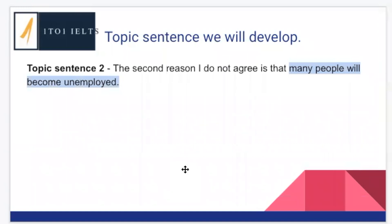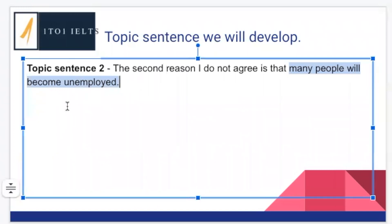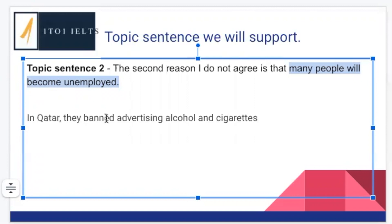Now this is going to be a little bit more difficult. The second reason I do not agree is that many people will become unemployed. How are we going to give an example for this? Obviously there has never been a complete ban on all forms of advertisement, so we can't give a specific example. Could we maybe look at a smaller area — has there been an area of advertising that has been banned in the past? Mary says in Qatar they've banned advertising alcohol and cigarettes. They've banned this — but just saying that isn't going to be sufficient. I need a result to support my main idea.